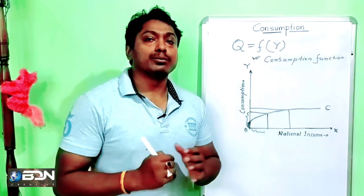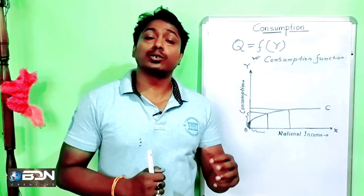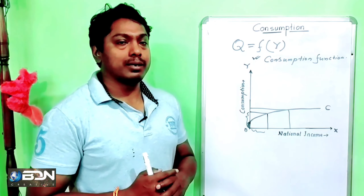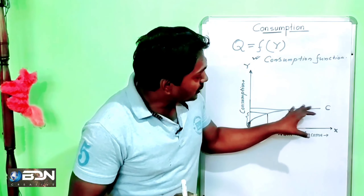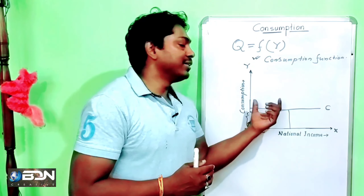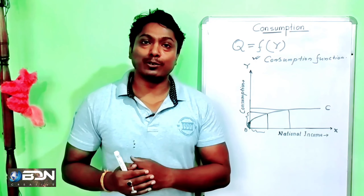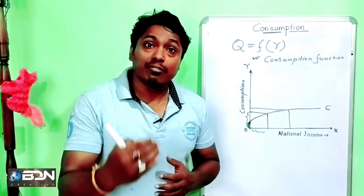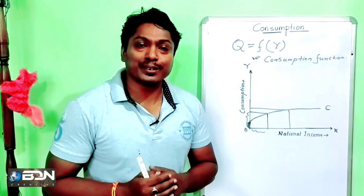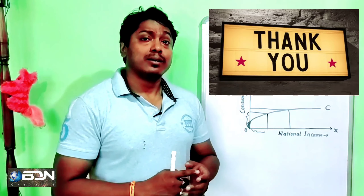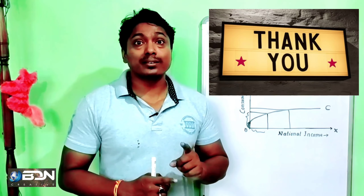Now the question is: how does consumption start? If income is zero, is consumption also zero? Think about a student — their income is zero, but that does not mean they are not eating anything. So when income is zero, consumption is not zero. This consumption at zero income is actually called autonomous consumption. Autonomous consumption means that even when income is zero, there will still be some level of consumption.